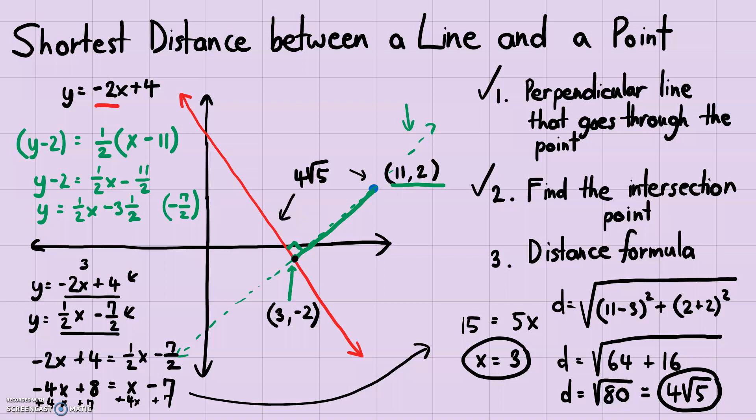It involves a few more steps than finding the shortest distance between two points, but the concept is: find the equation of the perpendicular line, find the intersection point of that perpendicular line and the original line, and then use the distance formula to find the shortest distance between the point and the line.